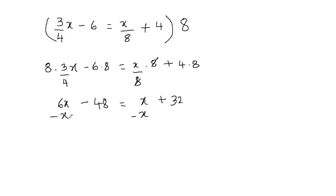6x minus x is 5x, and then I have minus 48. I'm going to bring that down. This equals x minus x is 0, so this is gone and we have 32 on the right hand side.